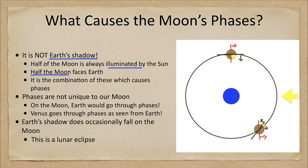Now in this second case it's a little bit different. This part here is facing the Sun, so it would be illuminated. This portion above the green line would then be the part that is facing Earth, and only this little portion here would be illuminated. So we would see a very thin crescent phase. It is the combination of these two things that gives the moon its phases.